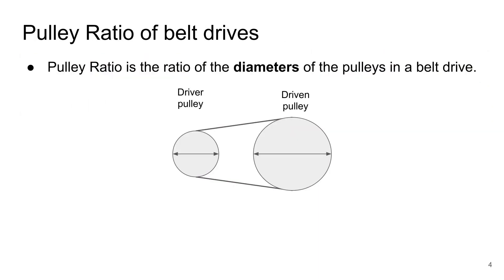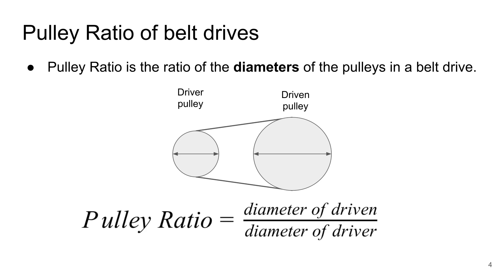The pulley ratio of a belt drive is defined as the ratio of the diameters of the pulleys. In a simple belt drive, there are two types of pulleys. First, there is the driver pulley, which drives the entire belt drive mechanism and is where torque and energy is applied. Then there is the driven pulley, which is being driven by the belt and is where work and energy is transmitted to. The pulley ratio is therefore the diameter of the driven divided by the diameter of the driver.